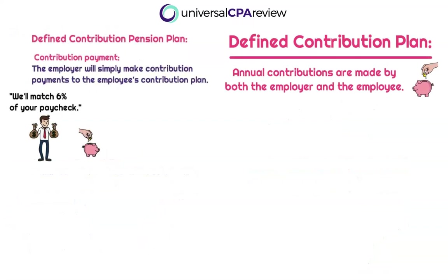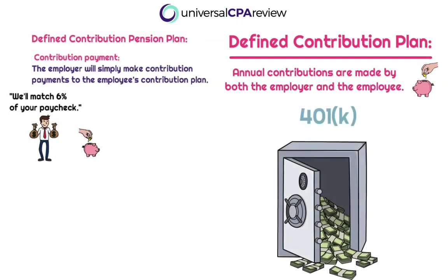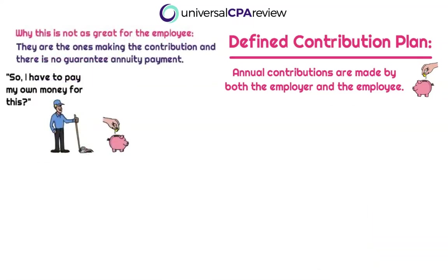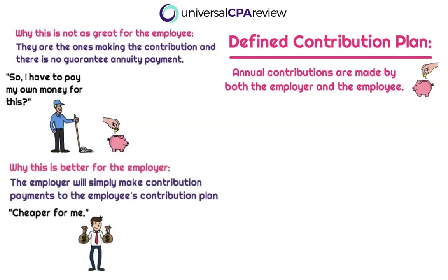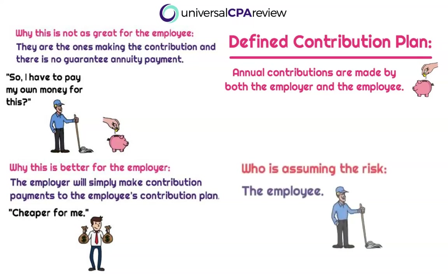If this was a defined contribution pension plan, it would be thought of more as a contribution payment, not an annuity payment. The employer would simply make a contribution payment to the employee's plan every single year — think of your 401k or traditional IRA. Very often the employee also has to contribute to their own plan, and the employer might say something like, 'We'll match 6% of your paycheck as our contribution to your traditional 401k.' This is not as great for the employee because they're not receiving that guaranteed annuity payment. Jay the janitor has to pay his own money to contribute to his retirement. But this is good for Altruistic Al because all he has to worry about is making those contribution payments annually. In a defined contribution plan, the employee assumes the risk, not the employer.